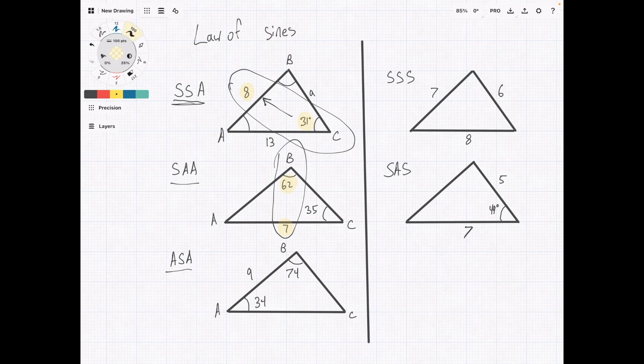Angle side angle. It doesn't look like we have it, but actually you can figure out this angle by doing 180 minus 34 minus 74. Plug that in real fast. 180 minus 74 minus 34 equals 72. Okay, so angle C is 72 degrees. And then we have a matching pair here. So this is again, law of sines.